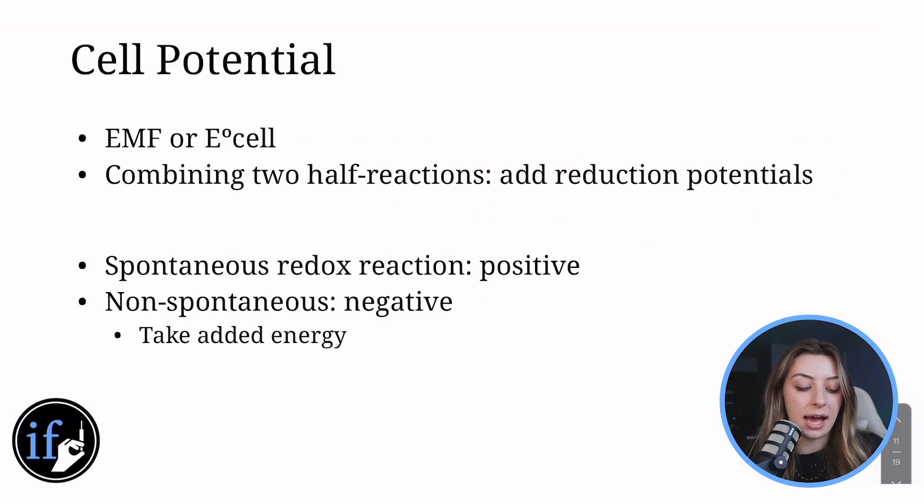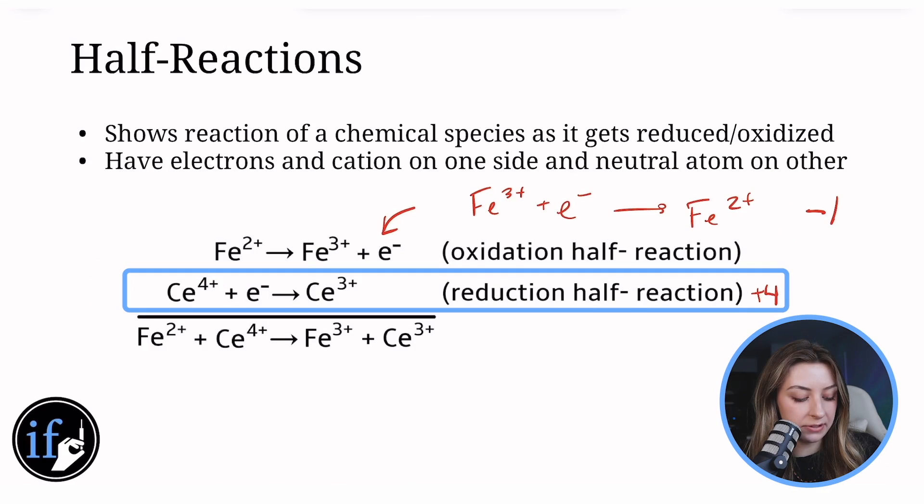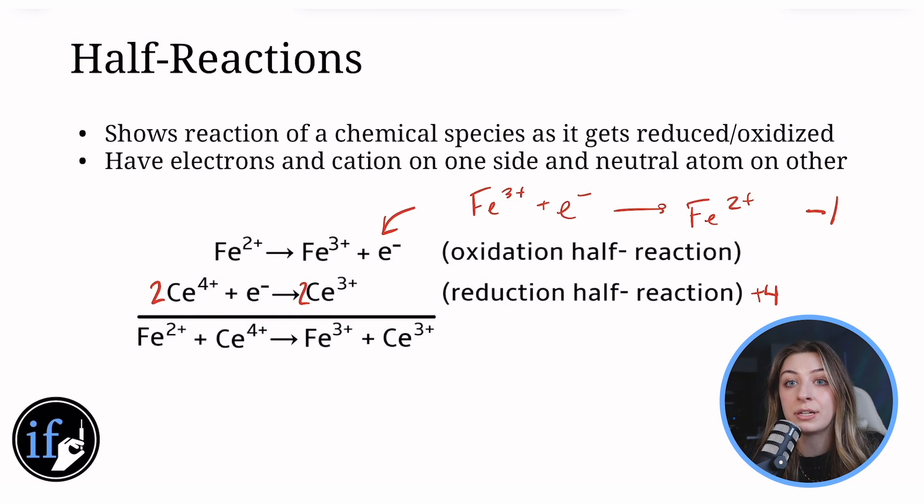Now another thing to know is that stoichiometry here is not important. So if this had a two in front of it or whatever, I would not multiply my reduction potential by two. This is not like thermodynamics and stuff where coefficients are really important, and when you're calculating Keq and stuff like that. Not here. Do not do stoichiometry or coefficients in your half reactions or in your cell potentials. Just go with the numbers that they give you and you just know that you may have to flip the sign.